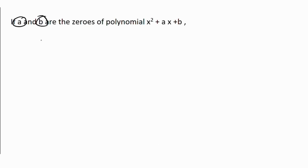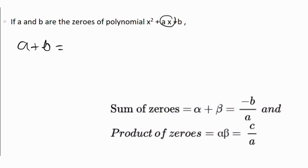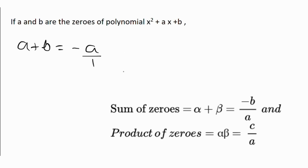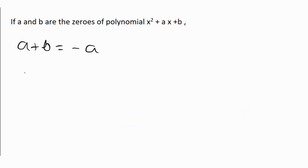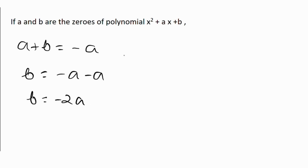In this question, a and b are given as the zeros of the polynomial. So we can say that the sum of the zeros, which is a plus b, equals the negative of the coefficient of x divided by the coefficient of x², which is minus a over 1, giving minus a. Transposing, we get b equals minus 2a.